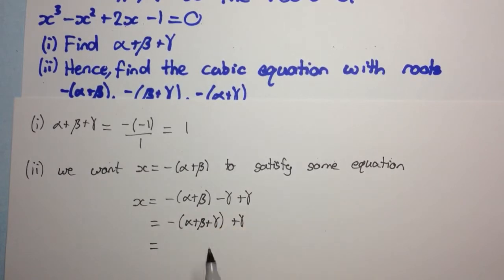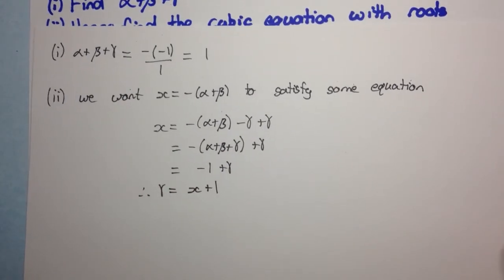Alright, now this minus 1, this here is minus 1 because from above we have alpha plus beta plus gamma is equal to 1. So we have minus 1 plus gamma. And so, therefore, we have gamma equal to x plus 1.